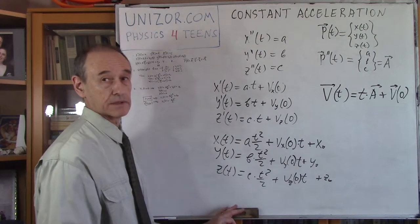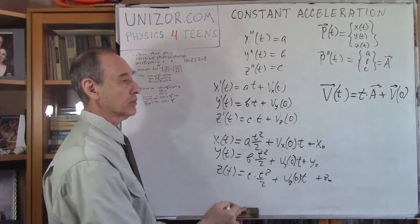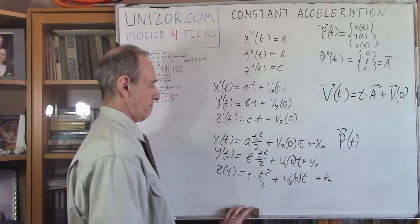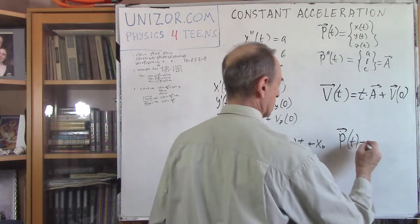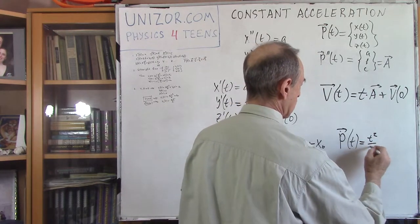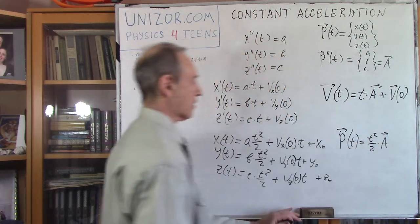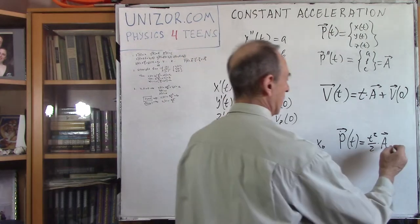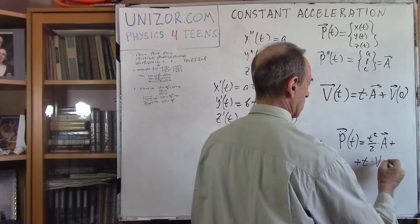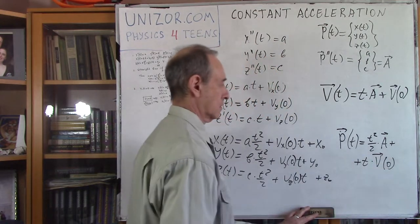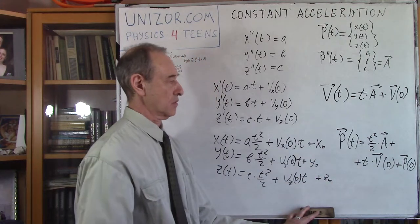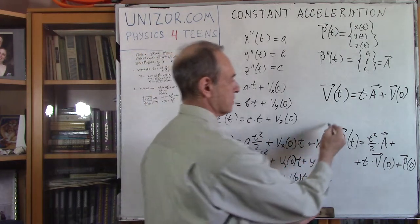Now let's talk about the vector format. These three components are the components of my position vector at time t, and these three components are my acceleration. So the position vector P of t equals t-squared over 2 times acceleration vector a, plus t times the initial velocity vector at moment 0, plus the initial position vector at moment 0 — that's x0, y0, and z0. This is the same as the three component equations, but in vector format.